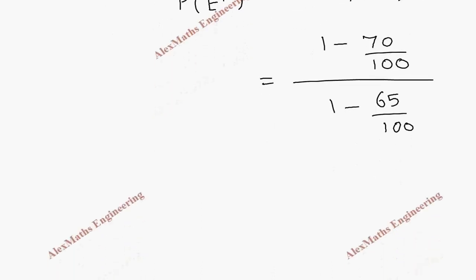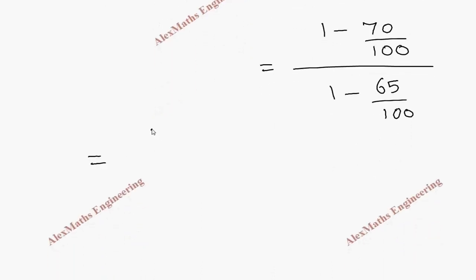Now, let's take LCM in the numerator. So it is 100 minus 70 by 100 whole divided by 100 minus 65. You can cancel this.